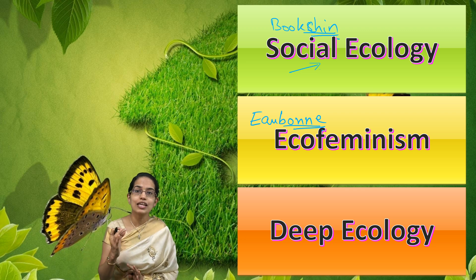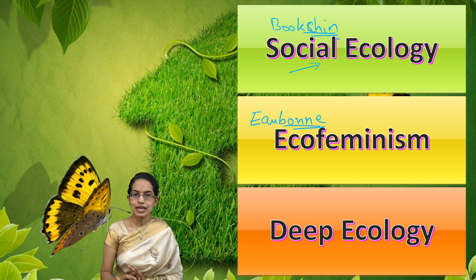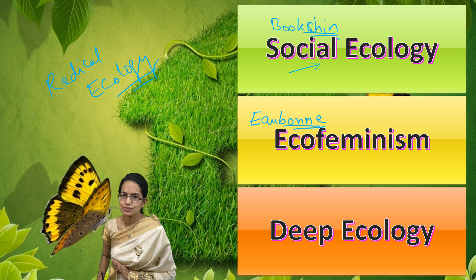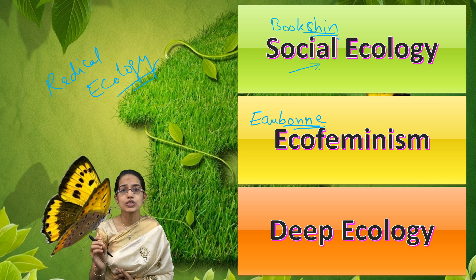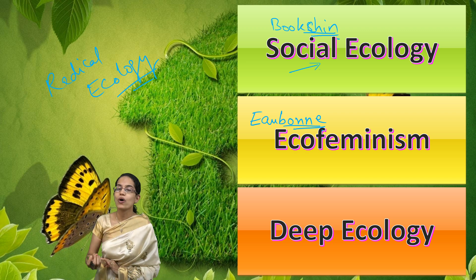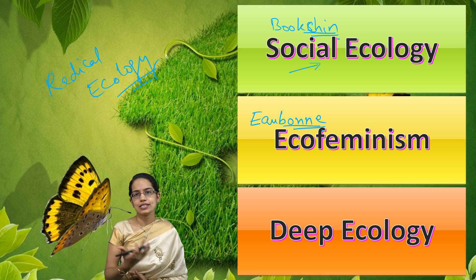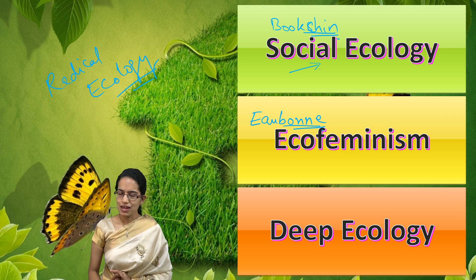Those are the three important approaches under the concept of environmental ethics within radical ecology, making it a prime focus for understanding environmental ethics overall. In summary, we as human beings have a moral, social, and ethical responsibility to protect the surrounding creatures and both the biotic and abiotic components around us. That was environmental ethics.